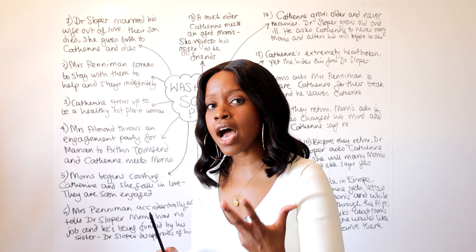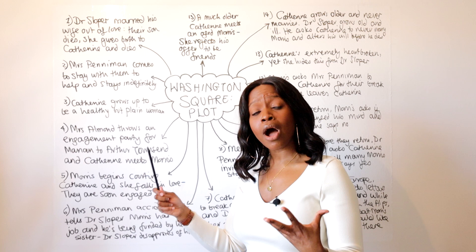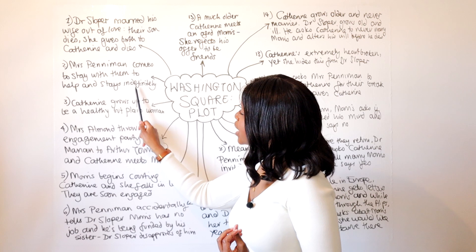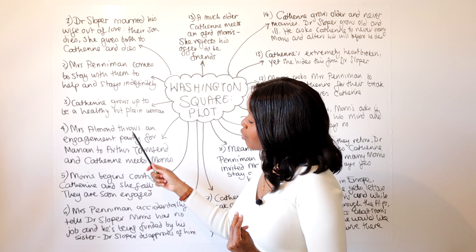Afterwards, we learn that Mrs. Peniman, one of Dr. Sloper's sisters and a widow, comes to stay with him at his residence. He's very wealthy and part of New York's elite class. She stays to help raise young Katherine and make her into a woman as Dr. Sloper wishes. What was meant to be a semi-temporary arrangement ended up becoming permanent — she stayed well past Katherine's youth.